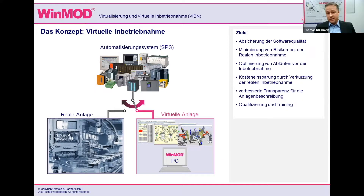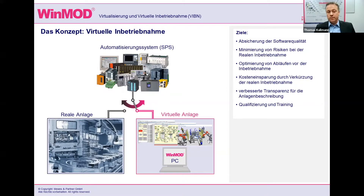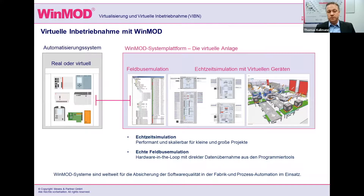Das heißt, was das eigentlich ist. Schwerpunkt ist hier, dass wir Automatisierungssysteme, also SPSen, testen wollen, bevor sie an die reale Anlage angeschlossen werden. Dazu verwenden wir eine virtuelle Anlage, die quasi dasselbe steuerungsrelevante Verhalten liefert wie die reale Anlage, um das Automatisierungssystem im Vorfeld zu testen, Optimierungen durchzuführen, Fehlerfälle zu minimieren, sodass das System mit der Automatisierungssoftware nachher optimal getestet in die reale Anlage geht. Und das Mittel dafür ist die WinMood Systemplattform.